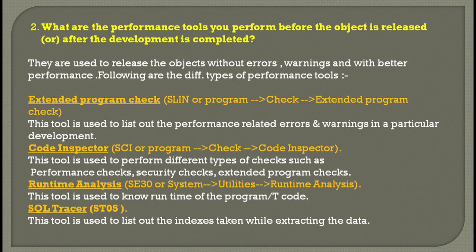Then you have Code Inspector, which is SCI, or you can go to Program > Check > Code Inspector. This is used to perform different types of checks like performance check, security check, and extended program check. You also have Runtime Analysis, which is SE30, accessible via System > Utilities > Runtime Analysis. This is used to know the runtime of your program or T-code. Then you have the SQL Tracer, which is ST05, and this tool is used to list out the indexes taken while extracting the data.